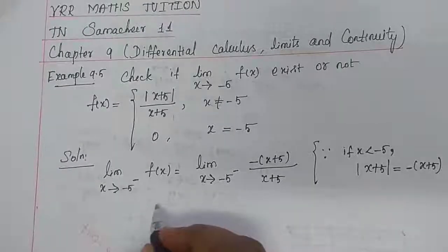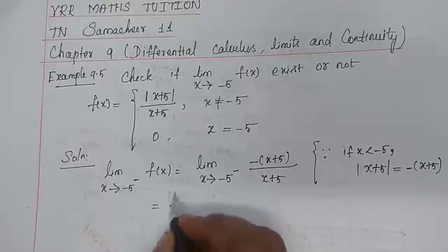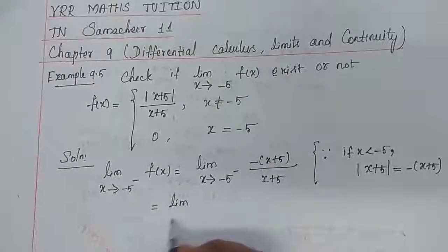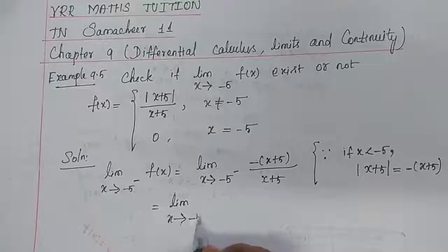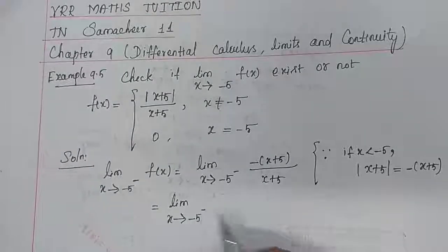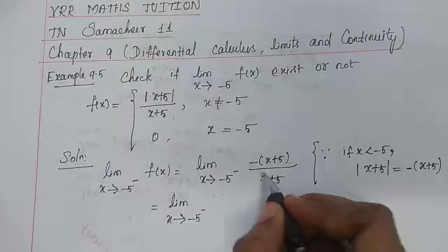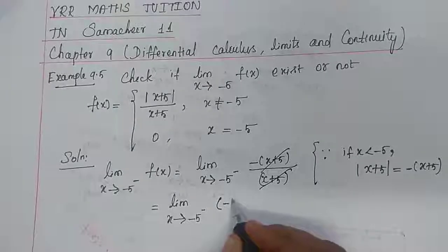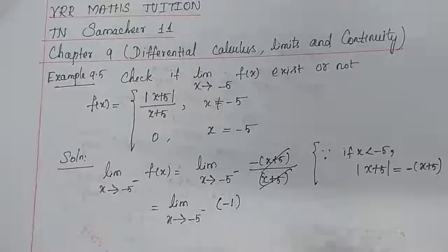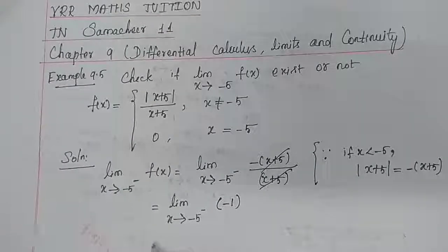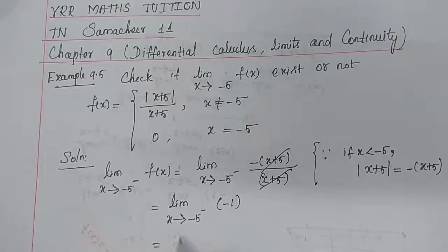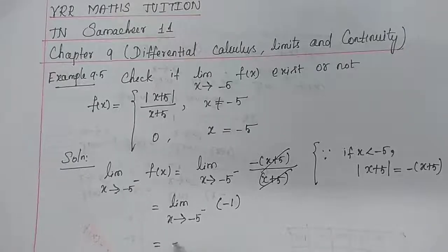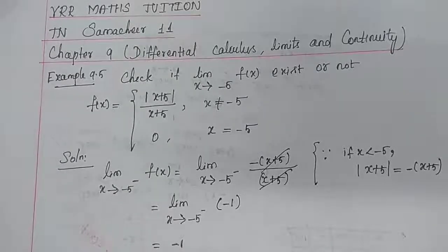Therefore, lim (x→−5⁻) f(x) = lim (x→−5⁻) [−(x+5)/(x+5)]. The (x+5) terms cancel, giving the value minus 1. So the left limit is −1. This is equation number 1.